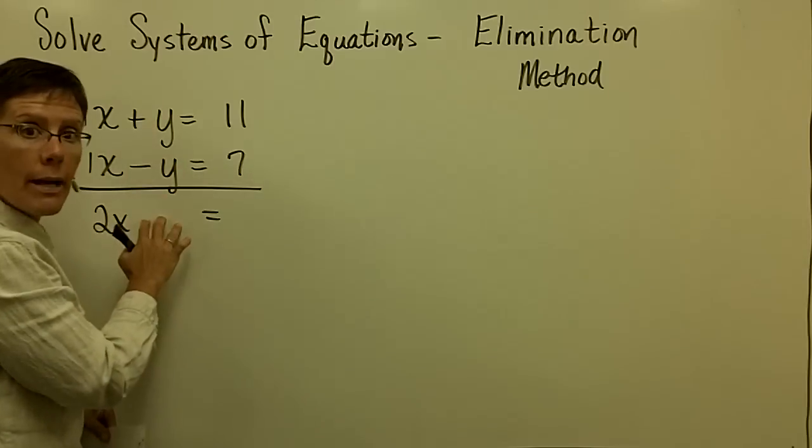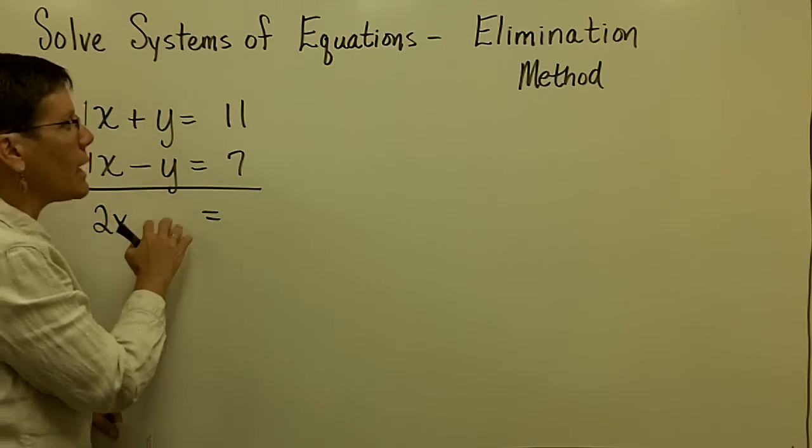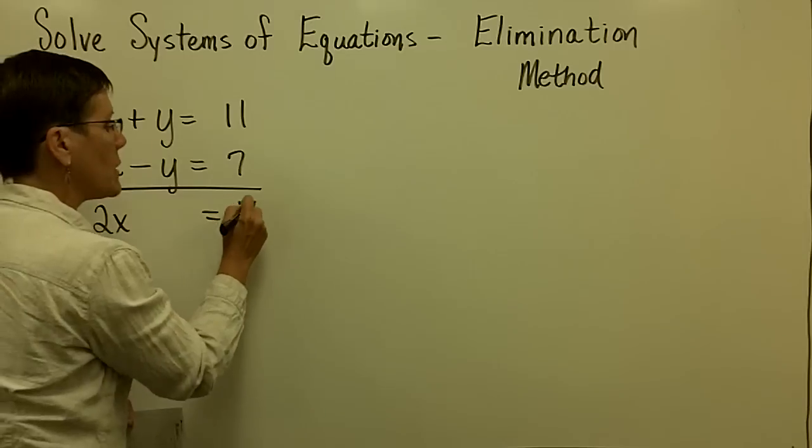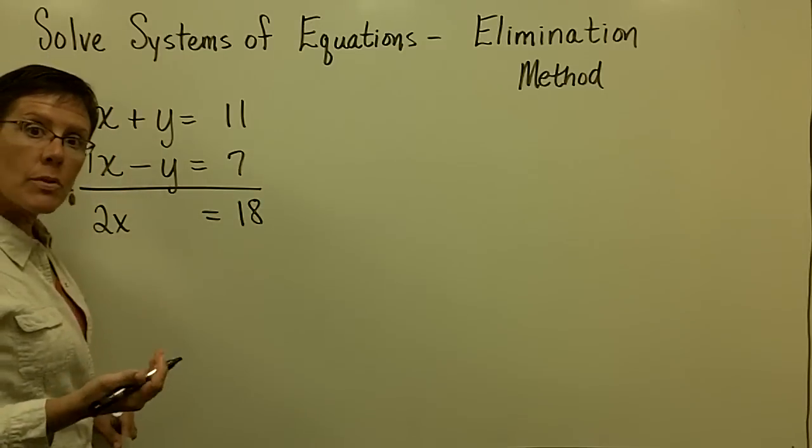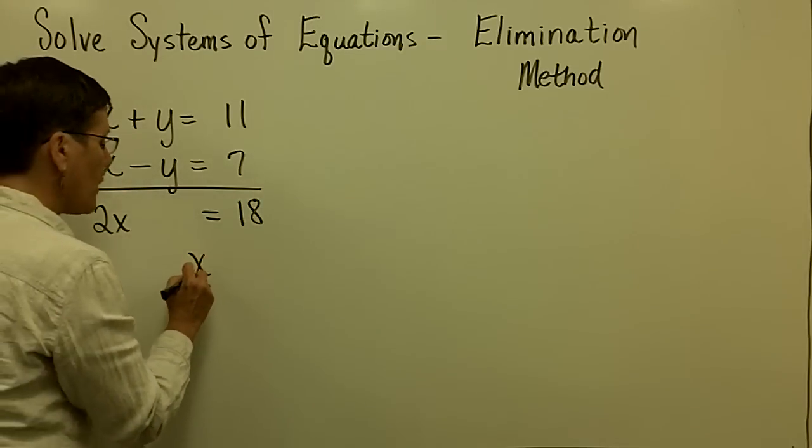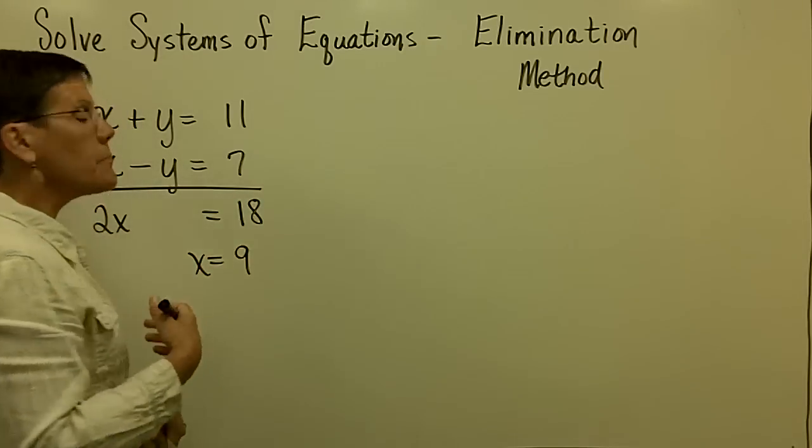Again, those cancel out. I don't ever put a 0 there or write anything down. And 11 and 7 adds to be 18. And when I divide both sides by 2, I find out that my solution for x is 9.